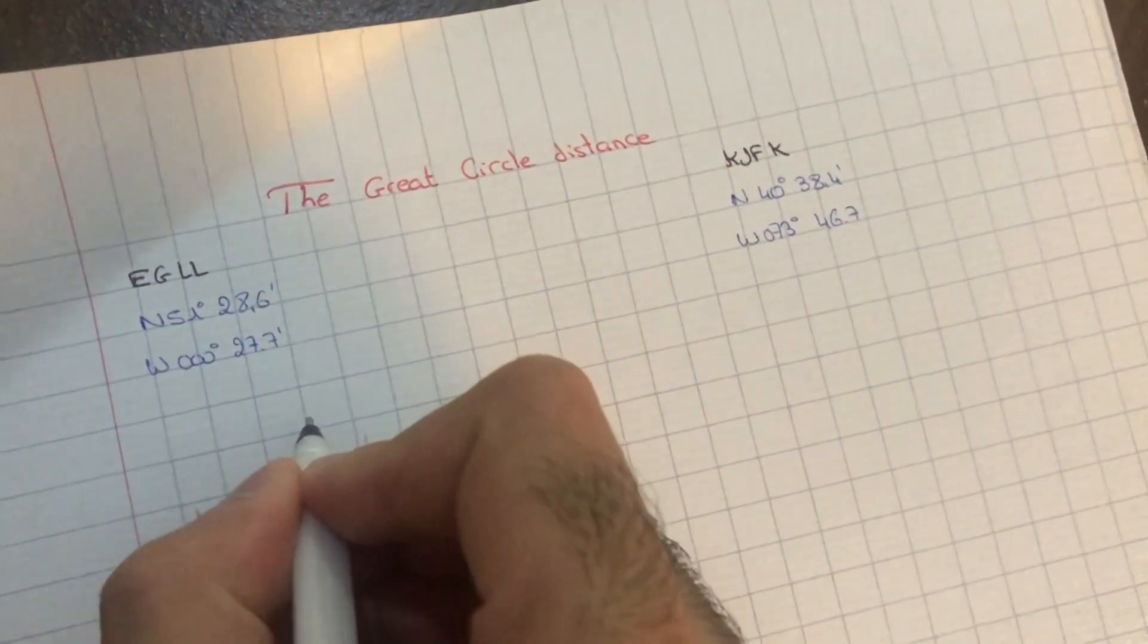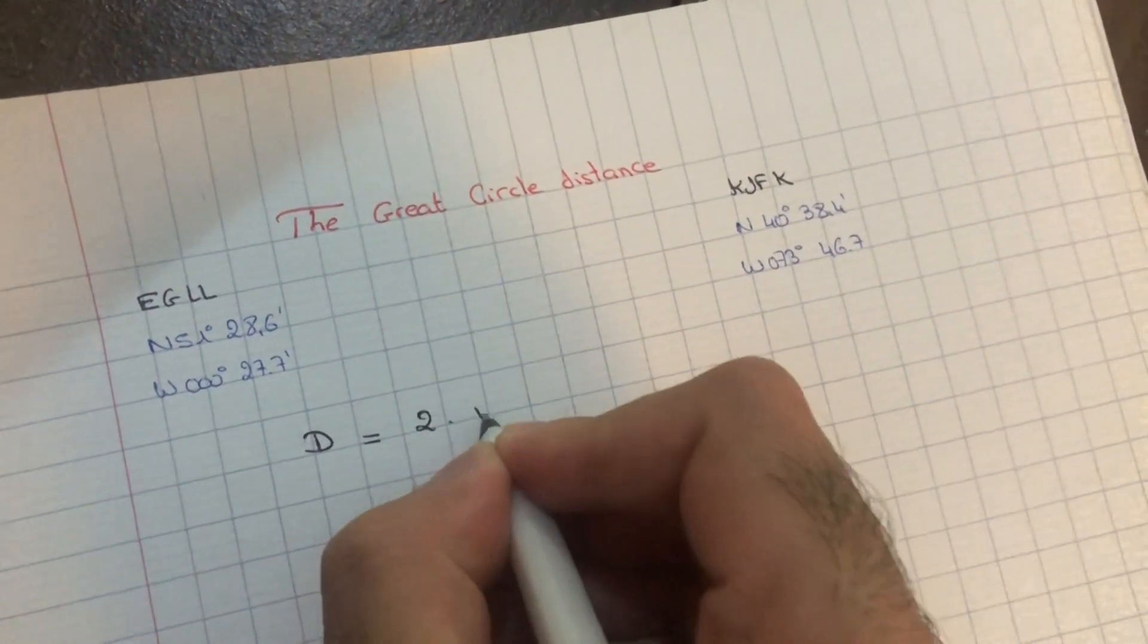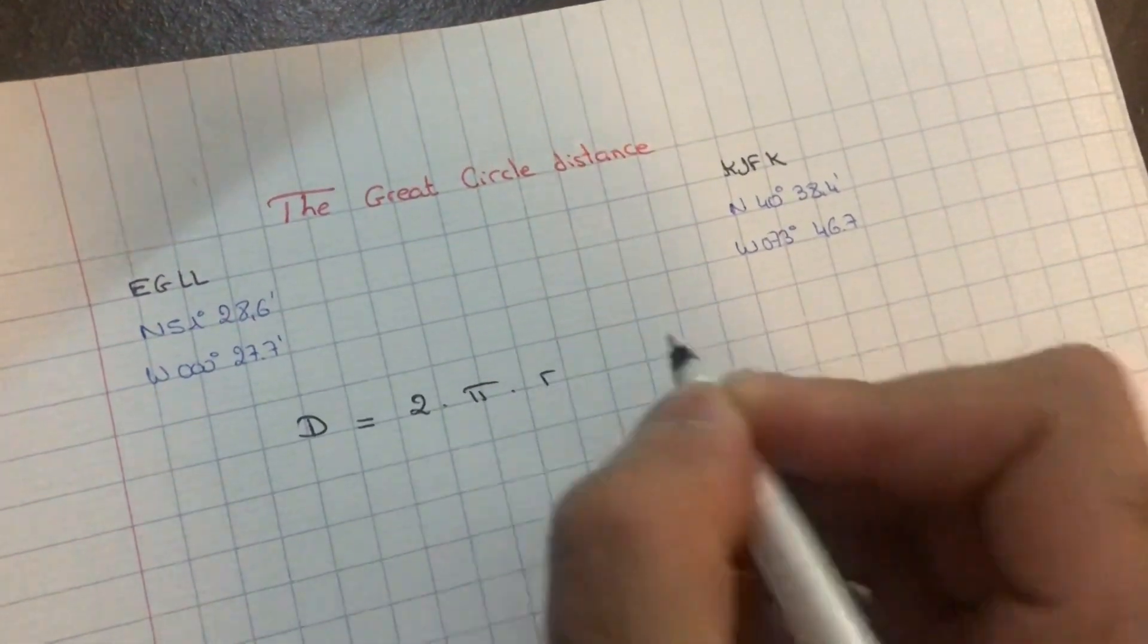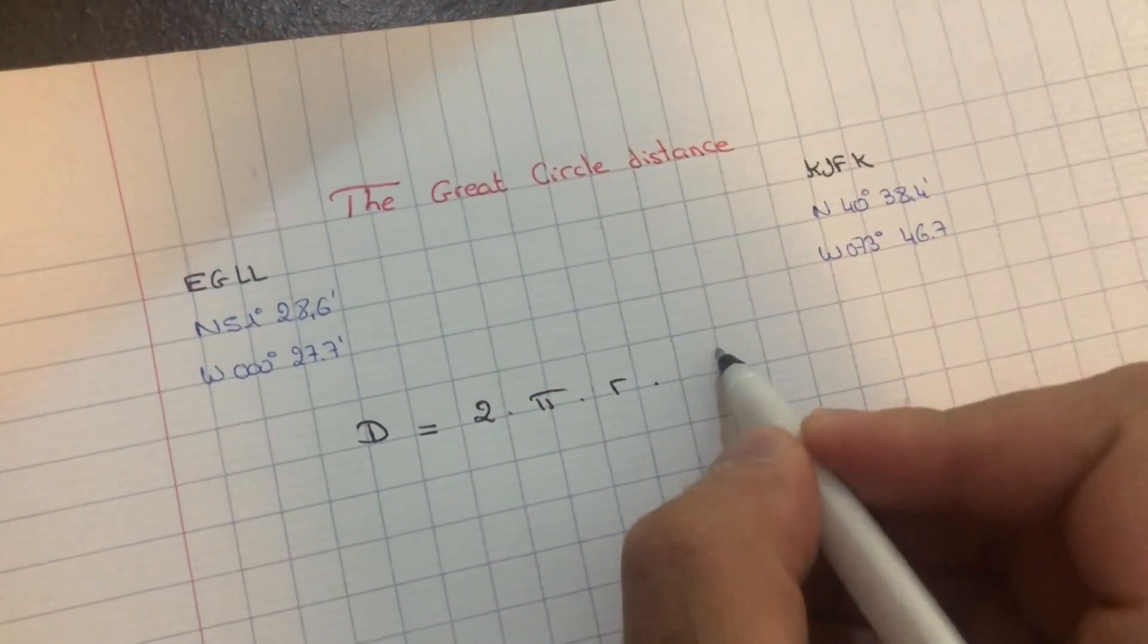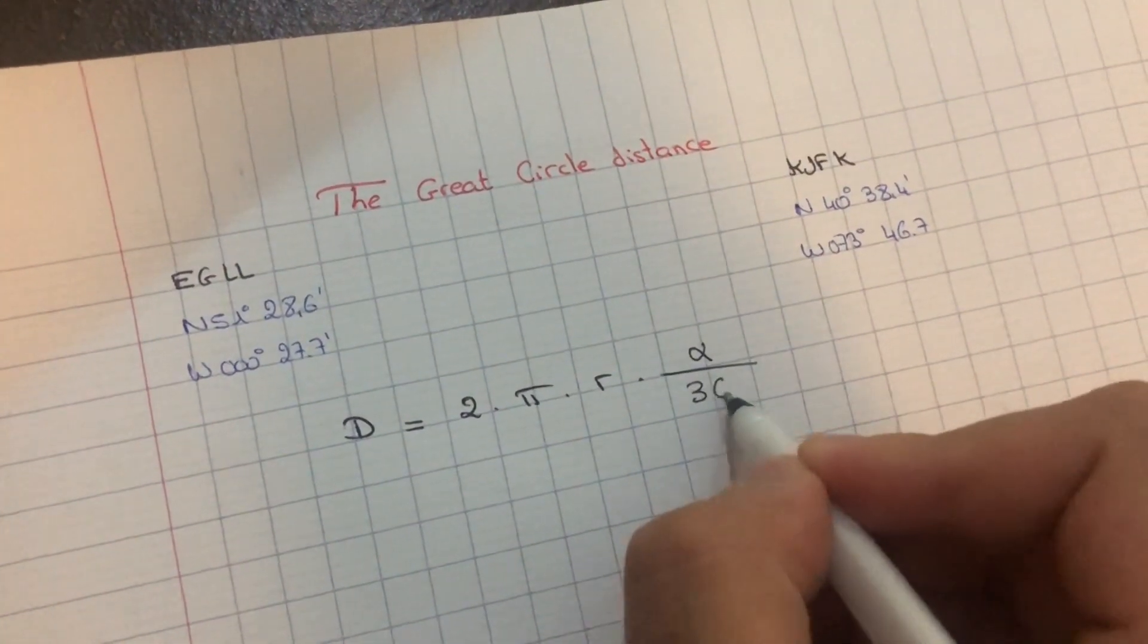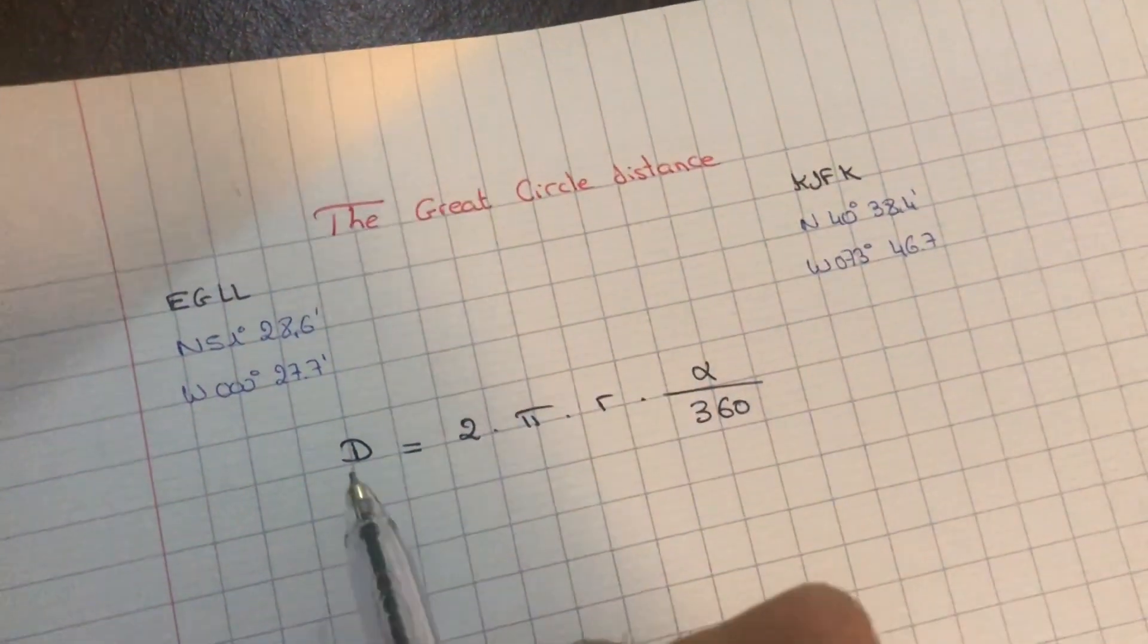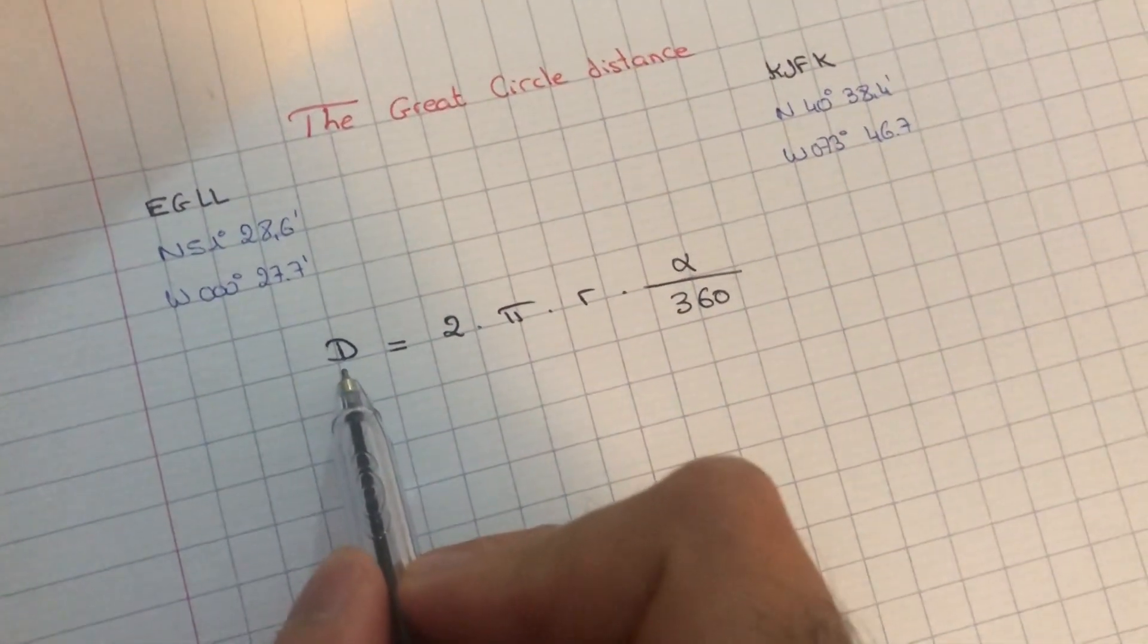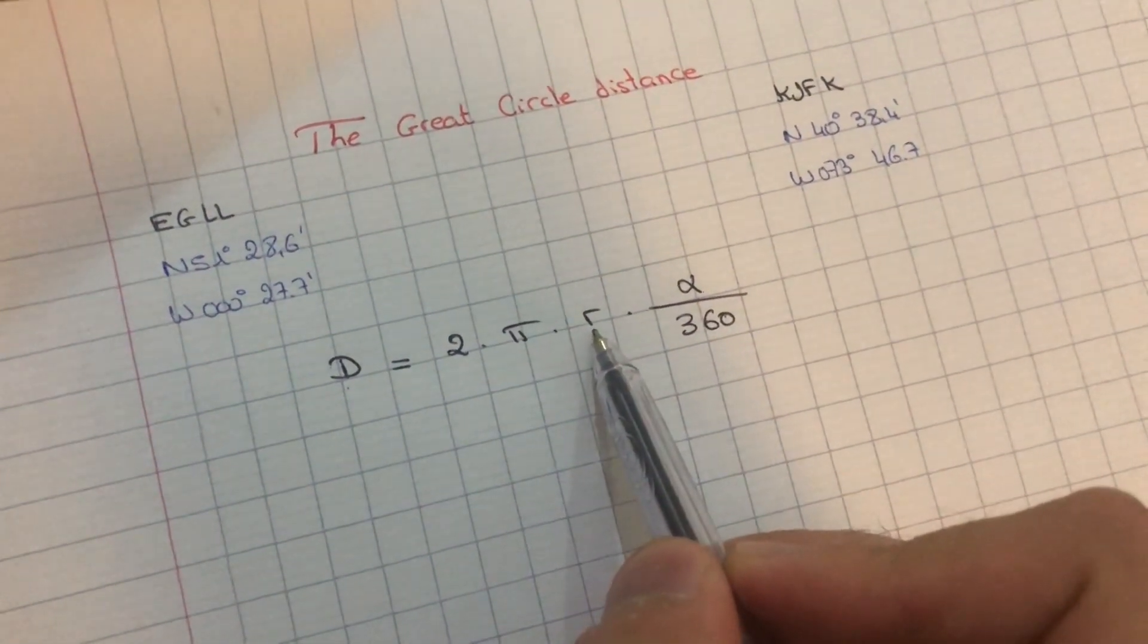So the formula is: the distance equals 2πr, which is the radius of the Earth, times α/360.